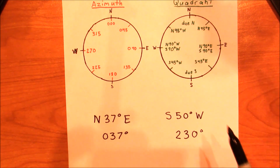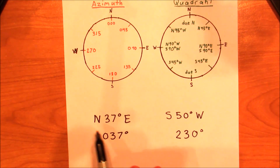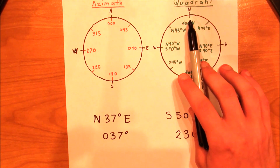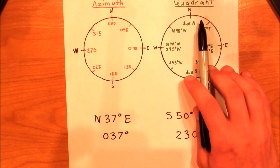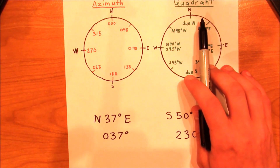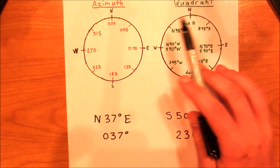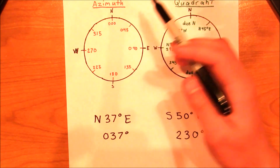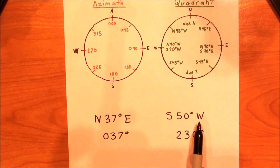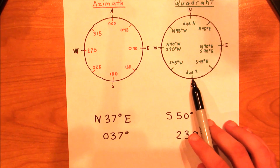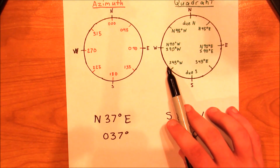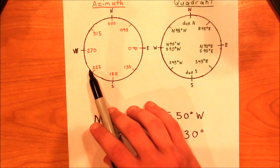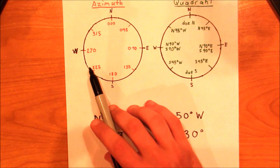If we look at north 37 degrees east, we start at north and head 37 degrees east, landing about here — which is about 037 on the azimuth compass. Whenever we look at south 50 degrees west, we start at south, head 50 degrees west, ending up right about here, which is 230 degrees on the azimuth compass.